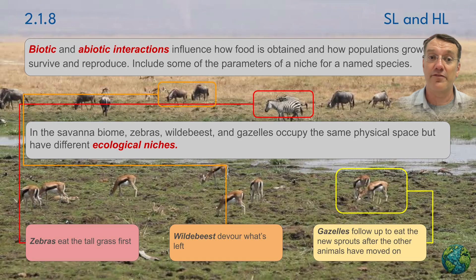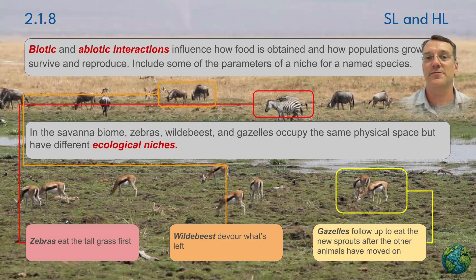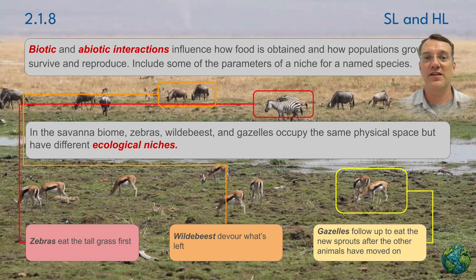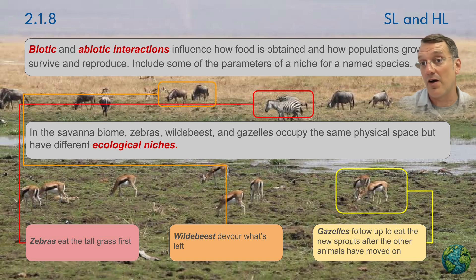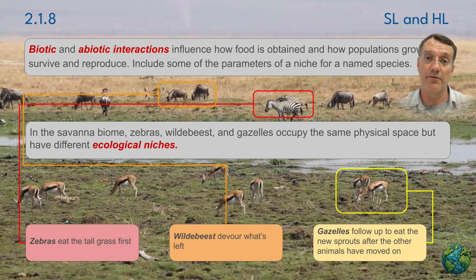Consider the African savannah, where a number of different herbivores occupy distinct niches despite sharing the same habitat. Zebras, wildebeest, and gazelles all feed on different parts of the grasses or on different stages of grass growth, and therefore they occupy different niches.